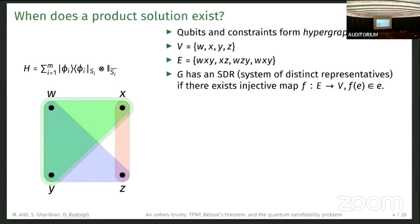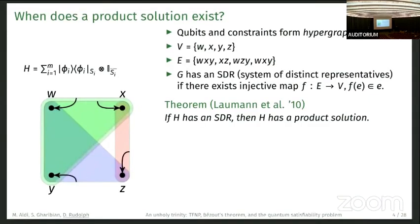We say that the graph G has an SDR, a system of distinct representatives, if there exists an injective map F from the edges to the vertices, such that each edge is mapped to a vertex that is part of the edge.